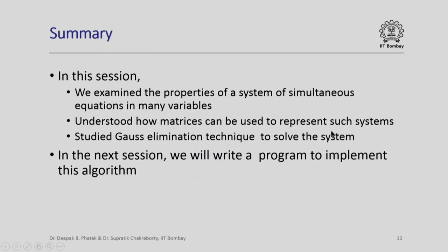In summary then, in this session we have examined the properties of a system of simultaneous equations in many variables. We have understood how matrices can be used to represent such systems and in particular we have studied the Gaussian elimination method of reducing the coefficient matrix to an upper triangular form so that the system can be solved very easily. In the next session we will attempt to write a program to implement the Gaussian elimination technique. Thank you.